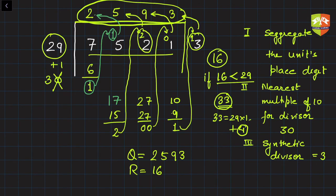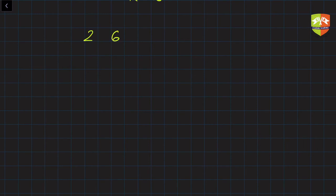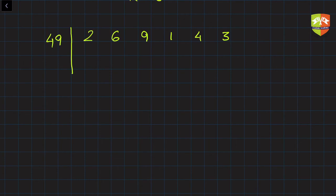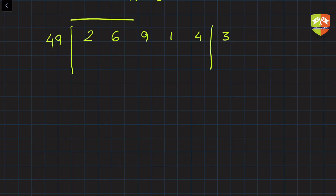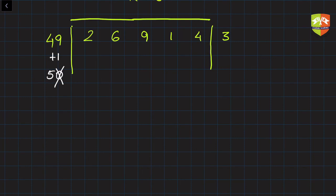This process will take some time to digest, so let's do one more example. Divide 269143 by 49. In physics calculations, for example, 9.8 divided by 2 is 4.9, so we often encounter division by 49 or similar numbers. First step: isolate the units place digit. The nearest multiple of 10 is 50, so we add 1 to get 50. The synthetic divisor is 5 — very quick to divide by.